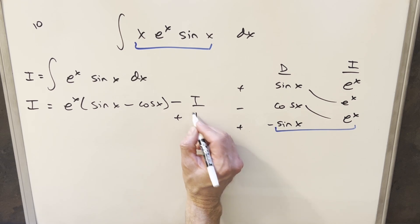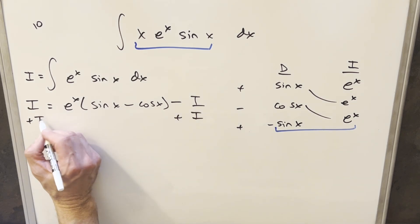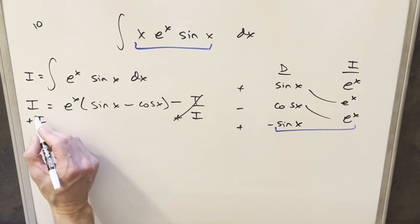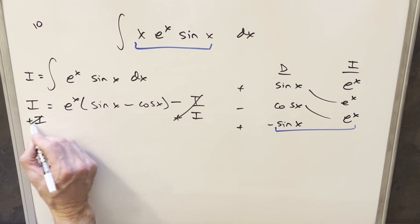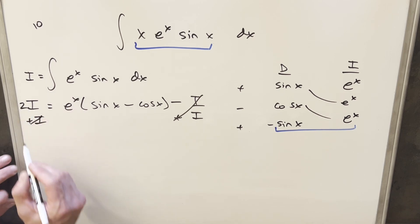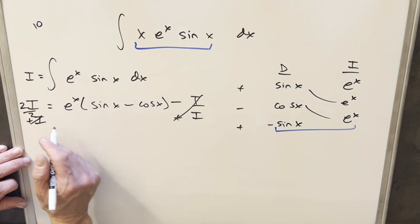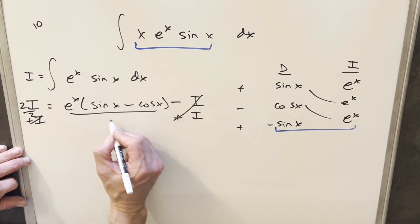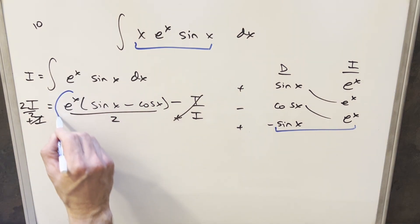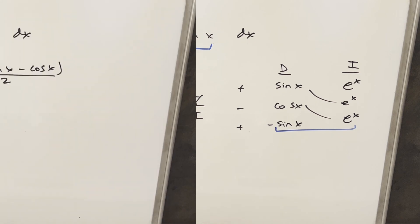I can add i on both sides, so this will cancel here, and we end up with 2i. Then if I divide by 2, this right here is going to be our value for the integral i.